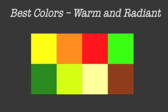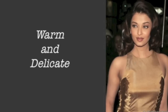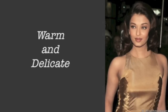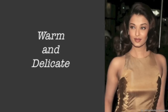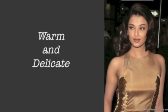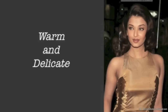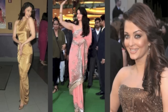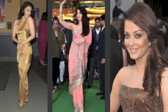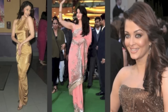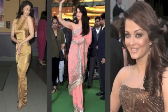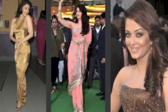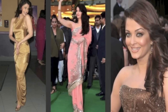Their best colors are orange, yellow, tomato red, lime green — these very warm bright colors. Next up we have warm and delicate. These people also have quite a bit of warmth and yellow in their skin, but they don't have as much yellow dominance as the warm and radiant people. That yellow looks a little bit mixed with other colors, so it appears softened. These ladies have more of a soft warm glow to them rather than a beaming radiant warm glow.